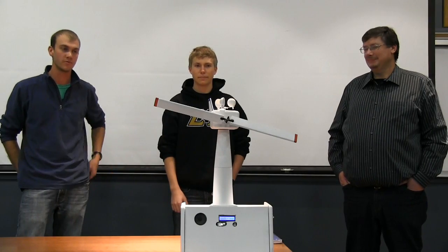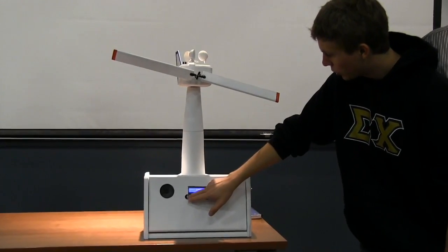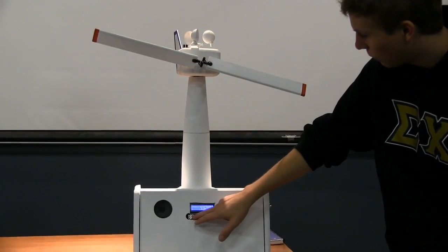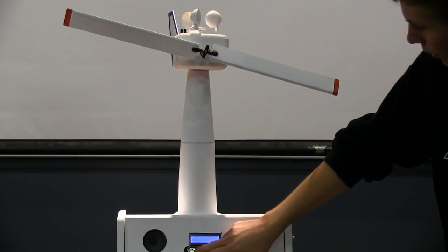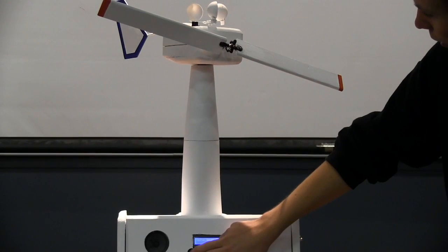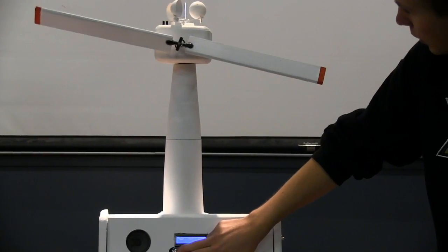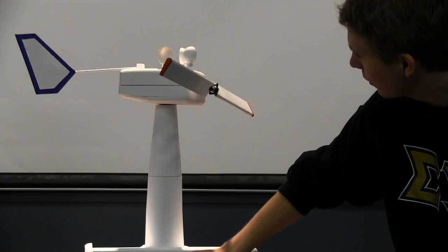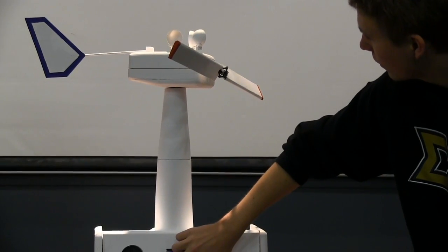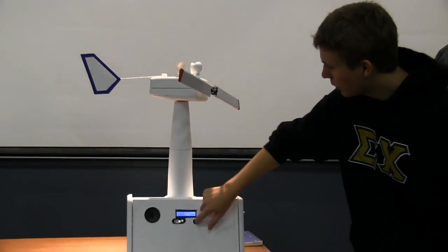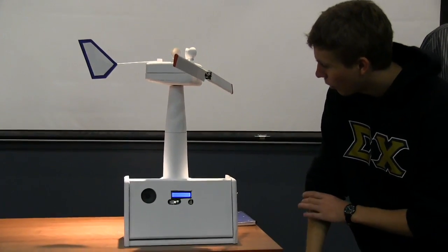For manual operation, we've got five different buttons, four for control and one for reset. So you can move it to the right, left, increase pitch, and decrease pitch. And then when you hit reset, it goes back to home in all directions.